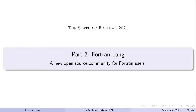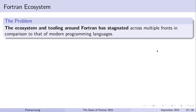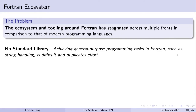Now I want to talk about the history of Fortran Lang, how it came about, and some of its goals and projects. I'll start with an acknowledgement that the ecosystem and tooling around Fortran has stagnated in a certain sense when compared to those of modern programming languages. First of all, Fortran has no standard library. Despite having many intrinsic functions, achieving general-purpose programming tasks such as string handling and sorting algorithms is still quite difficult — you either have to re-implement it yourself or find an existing implementation, leading to a lot of duplication.